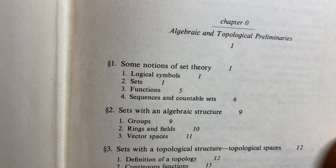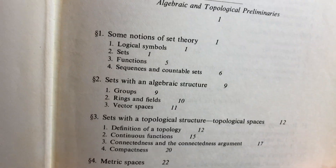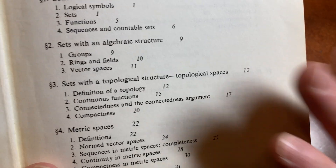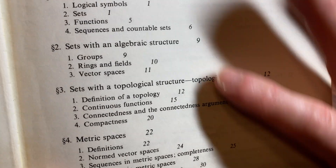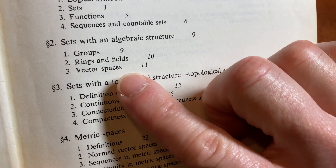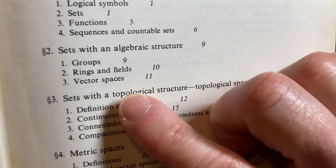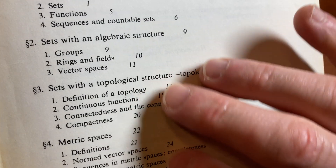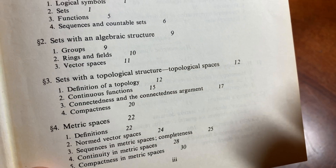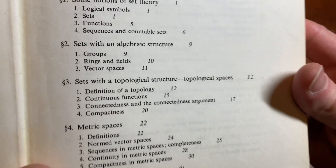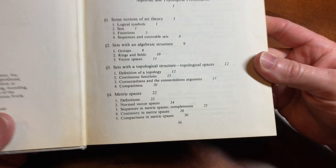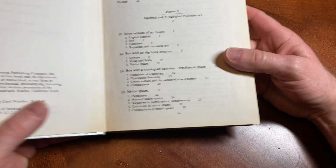Algebraic and topological preliminaries — I've read most of this stuff. It's really good, really clean, and it moves really quickly. It goes from groups to rings and fields to vector spaces really quickly, so it's like a quick recap. I like that, especially because I've already seen all this stuff — it's a nice refresher.